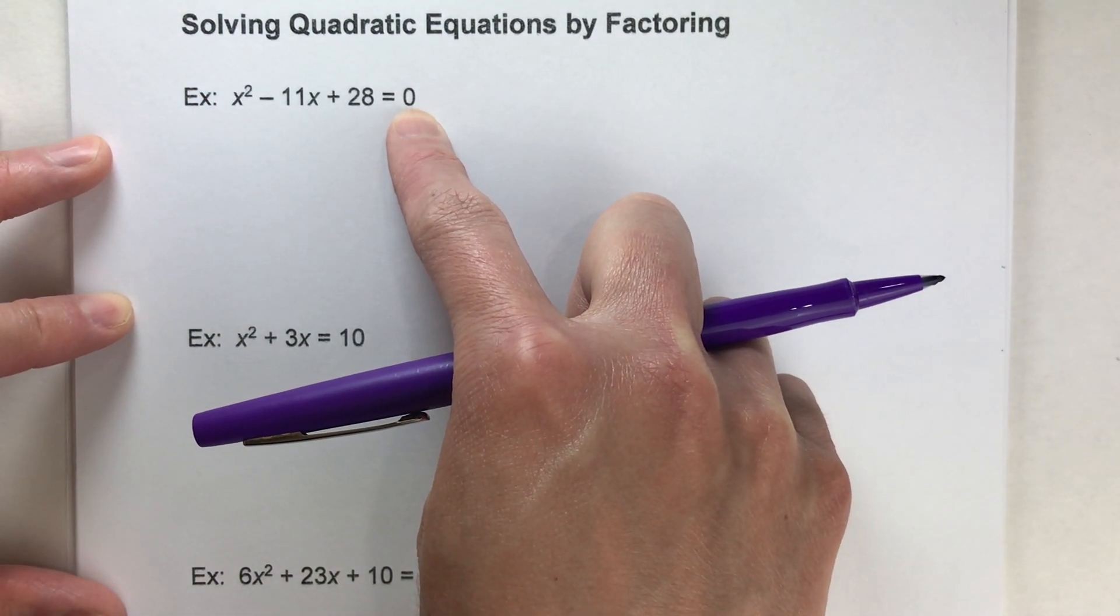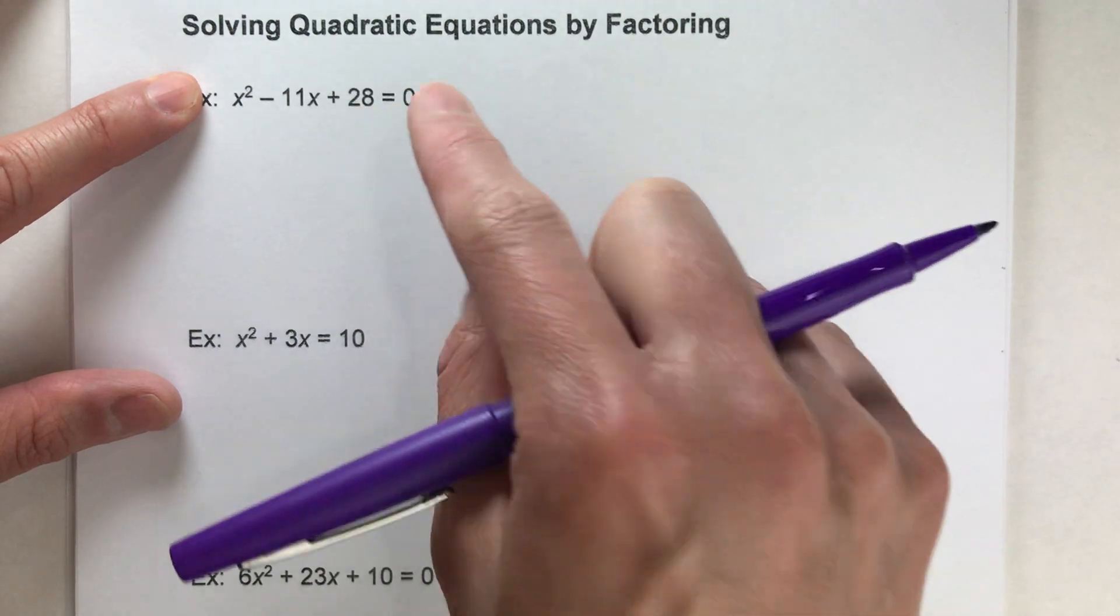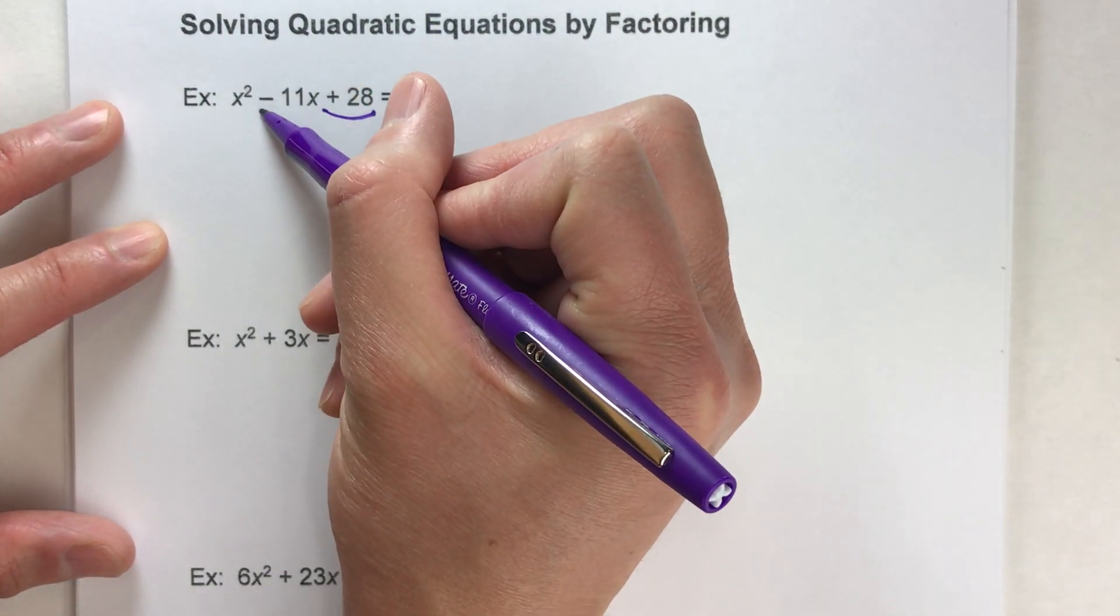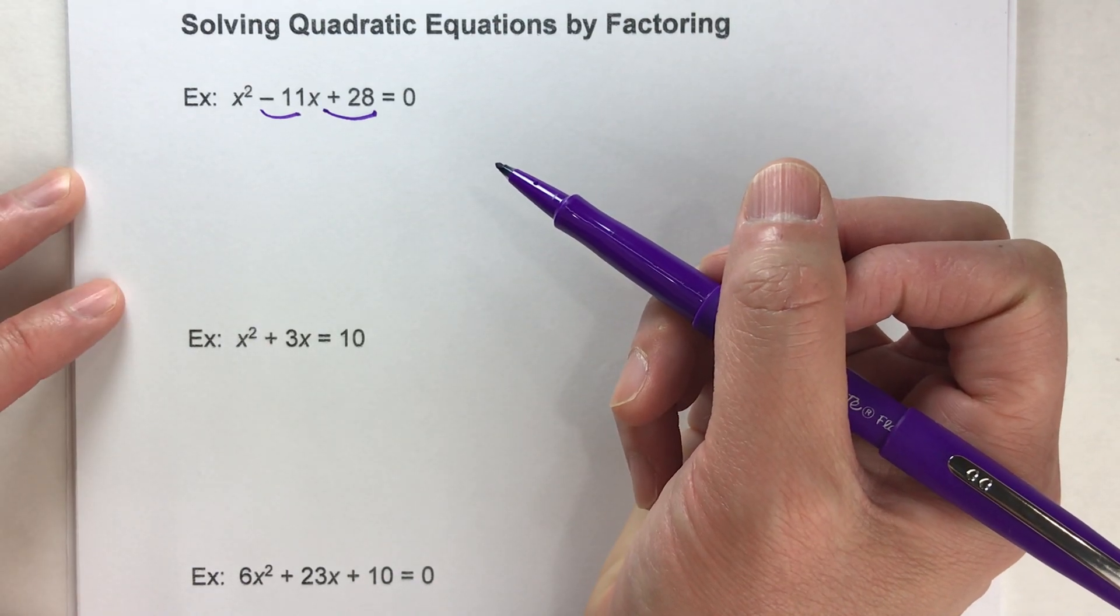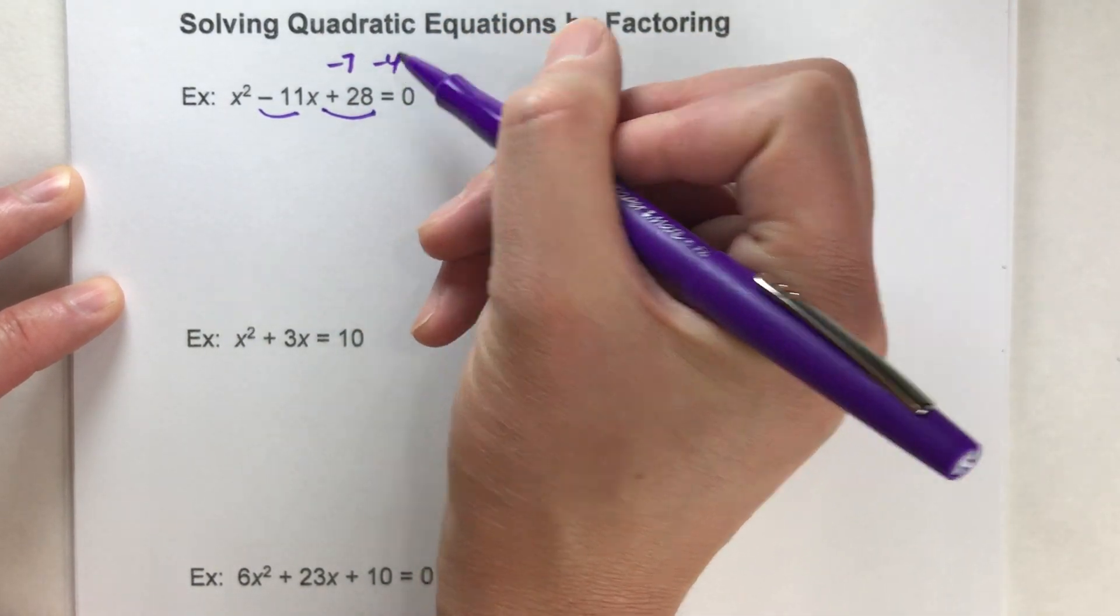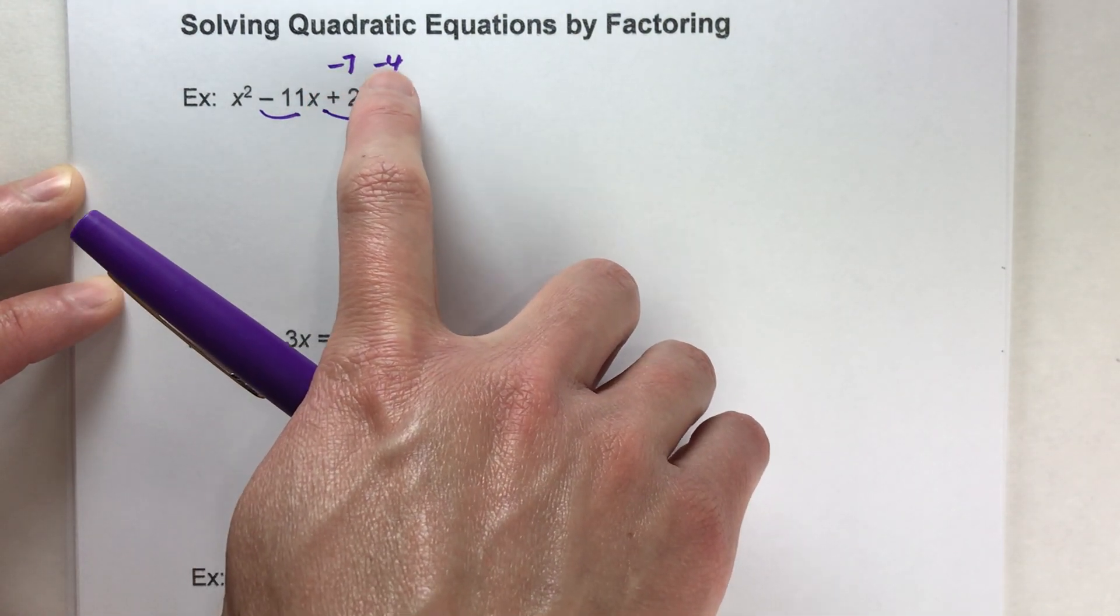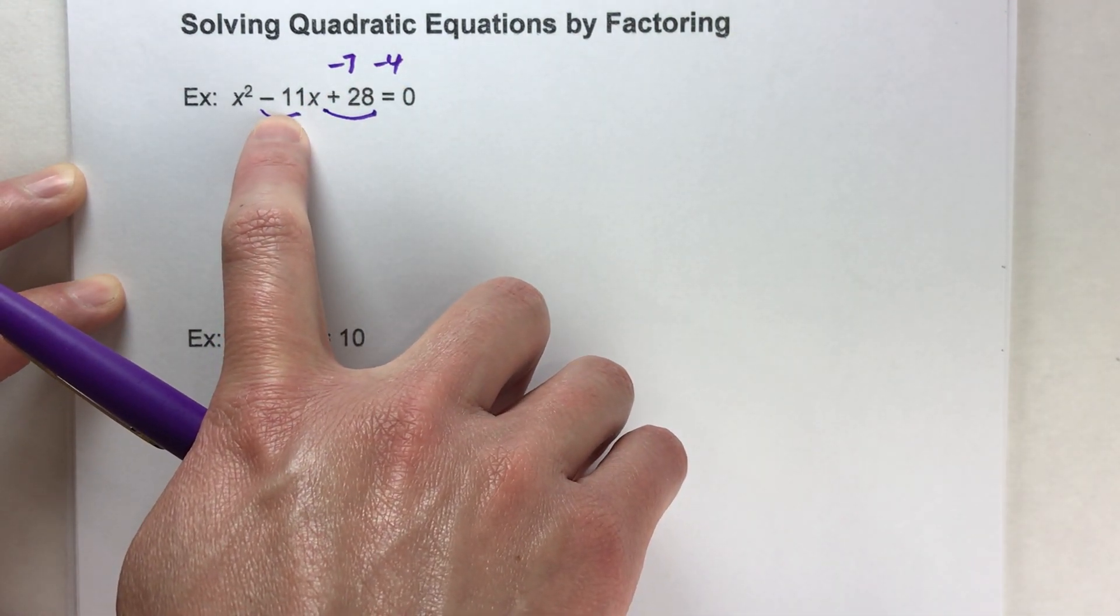Then your next step is to factor this. Remember to factor this we need two numbers that multiply to get positive 28 but they add to get negative 11. In this case negative 7 and negative 4 work because negative 7 times negative 4 is positive 28. Negative 7 plus negative 4 is negative 11.